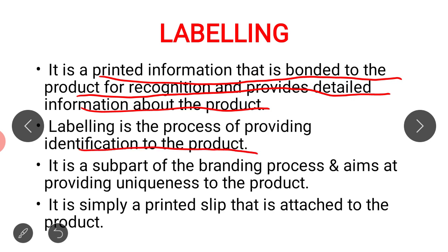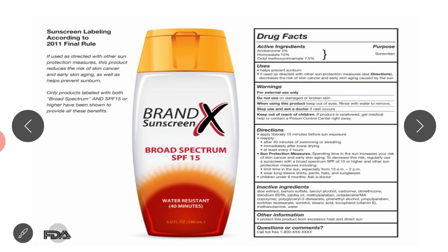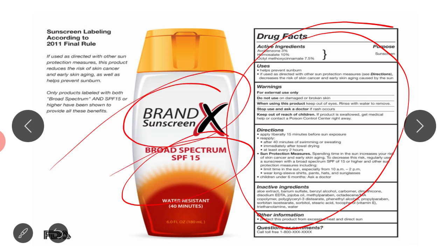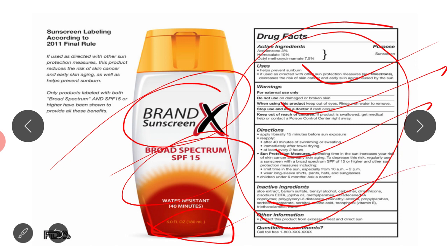Labeling is the process of providing an identification mark to the product. Your labeling provides uniqueness to a product because it contains different information — regarding the brand, date, grade, and other information written on the product. As you can see in this particular picture, the sunscreen shown has a lot of information on the label — which brand it is, the spectrum level, quantity, weight, how to use it, warnings, directions, ingredients, and other information. This is what we call labeling.